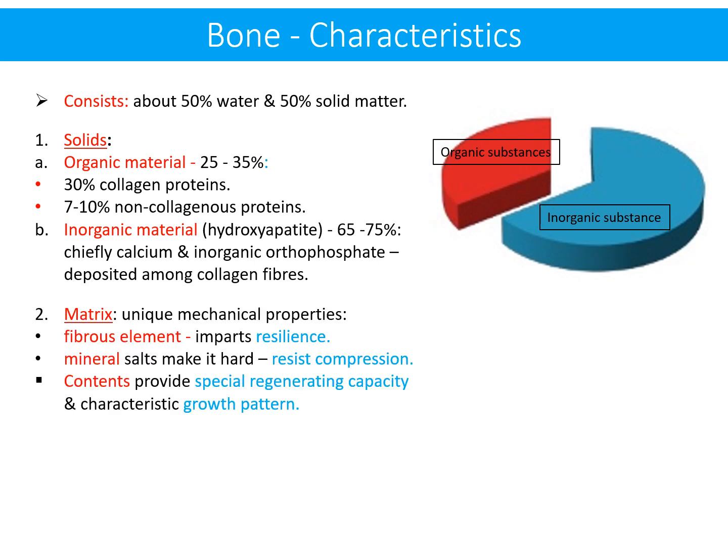65 to 70% of the solids are inorganic material in the shape of hydroxyapatite, composed chiefly of calcium and inorganic phosphates, deposited among the collagen fibers. The matrix has unique chemical properties: fibrous elements impart resilience to the bone tissue, mineral salts make it hard and resistant to compression forces, and the contents of the matrix provide a special regenerating capacity and characteristic growth pattern.